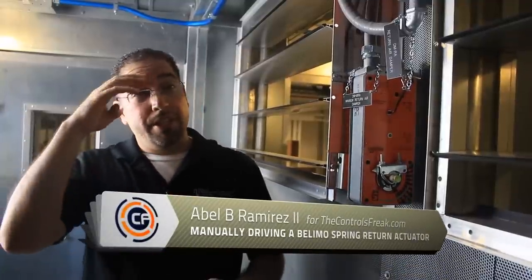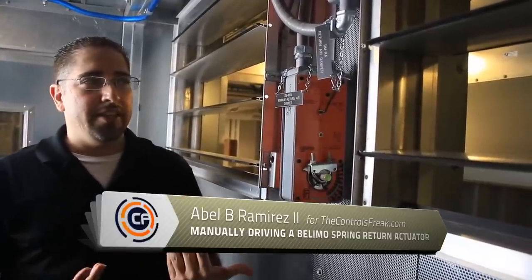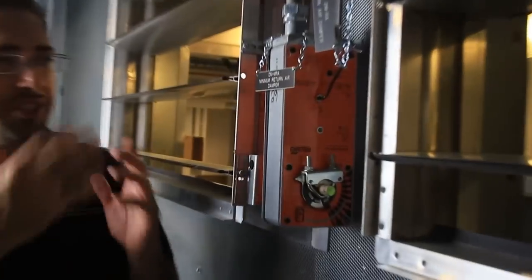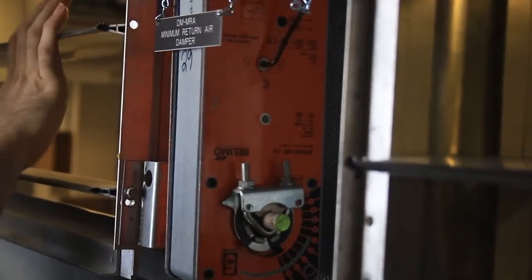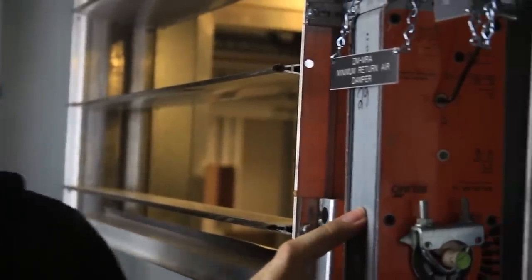All right, what we're looking at right now happens to be a damper with a Belimo actuator on it. One of the things I think some people misunderstand is how spring return actuators work, so we're going to take a look at this one real quick. We've got some opposed blade dampers here, and we've got one Belimo spring return actuator.